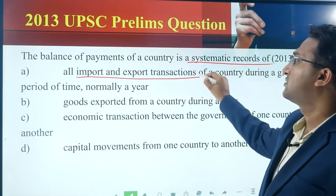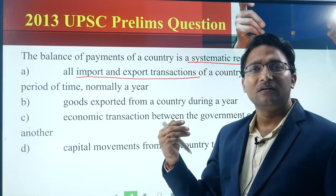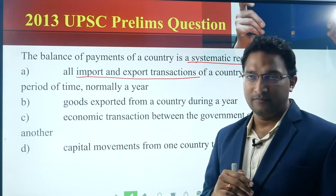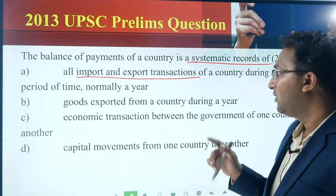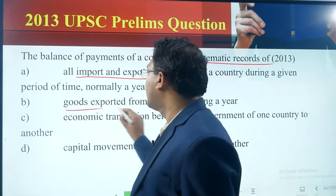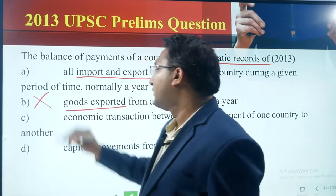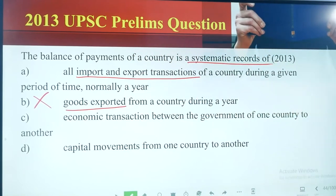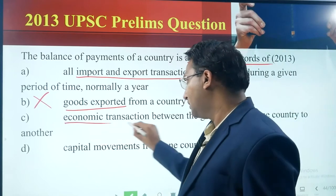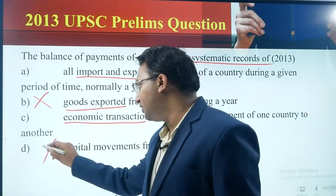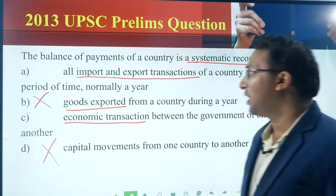Option A: all imports and export transactions of a country during a given period, normally a year. Option B: goods exported from a country during a year — this is completely wrong. Option C: economic transactions between the government of one country to another. Option D: capital movement from one country to another — this is also completely wrong.